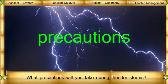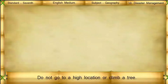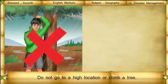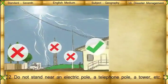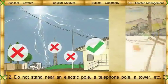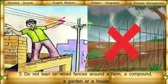What precautions will you take during thunderstorms? Do not stand on open ground or below a tree. Do not go to a high location or climb a tree. Do not stand near an electric pole, a telephone pole, a tower, etc. Do not lean on wired fences around a farm, a compound, a garden, or a house.